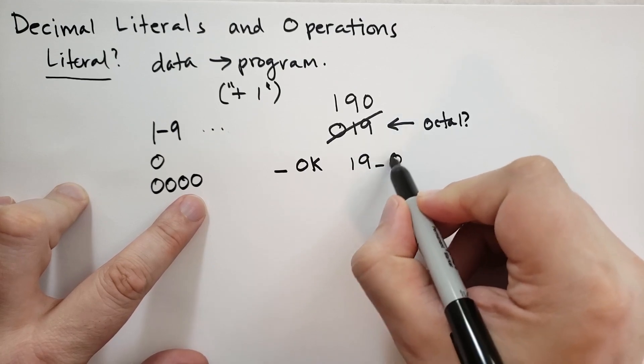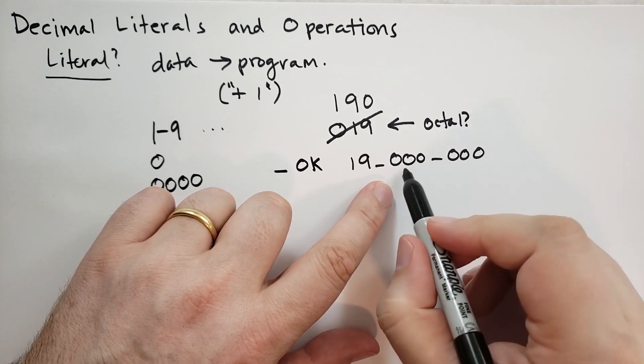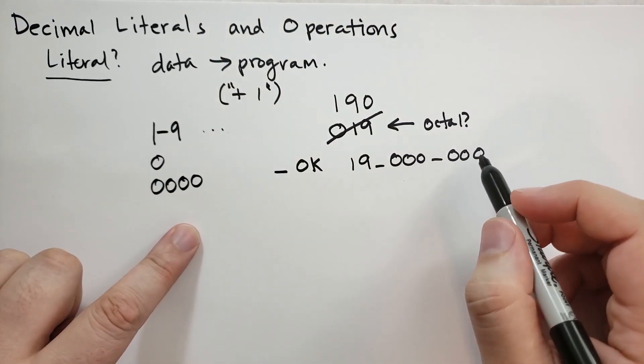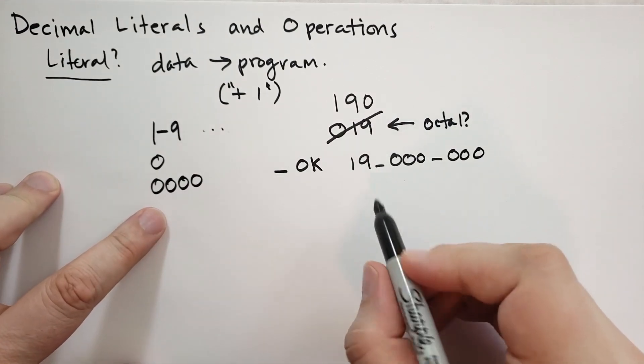For instance, if you have 19 million, you might want to write it out this way. That way, you can see that you have two groups of three zeros. This is a decimal literal. There's other kinds of literals we'll cover in a minute.